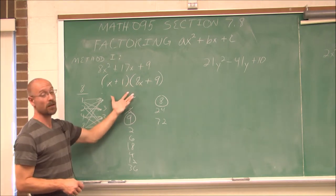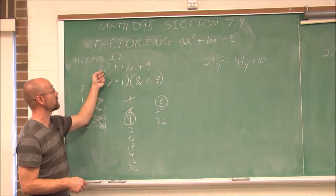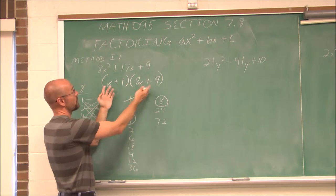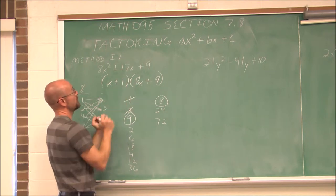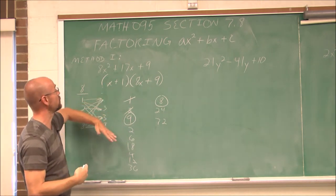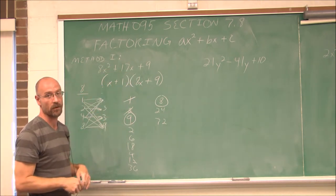And if we want to check our work, we can FOIL it. x times 8x is 8x squared. 8x and 9x, my outer and inner term, is 17x. And then 1 times 9 is 9. So if I FOIL it out, take the time to actually show that work, I'll get that value back.